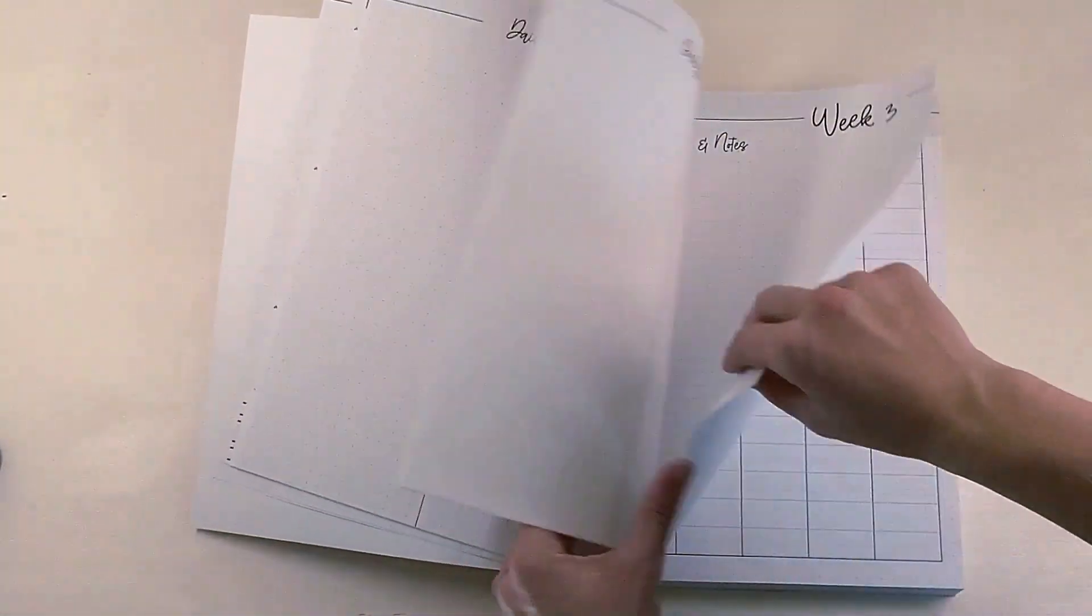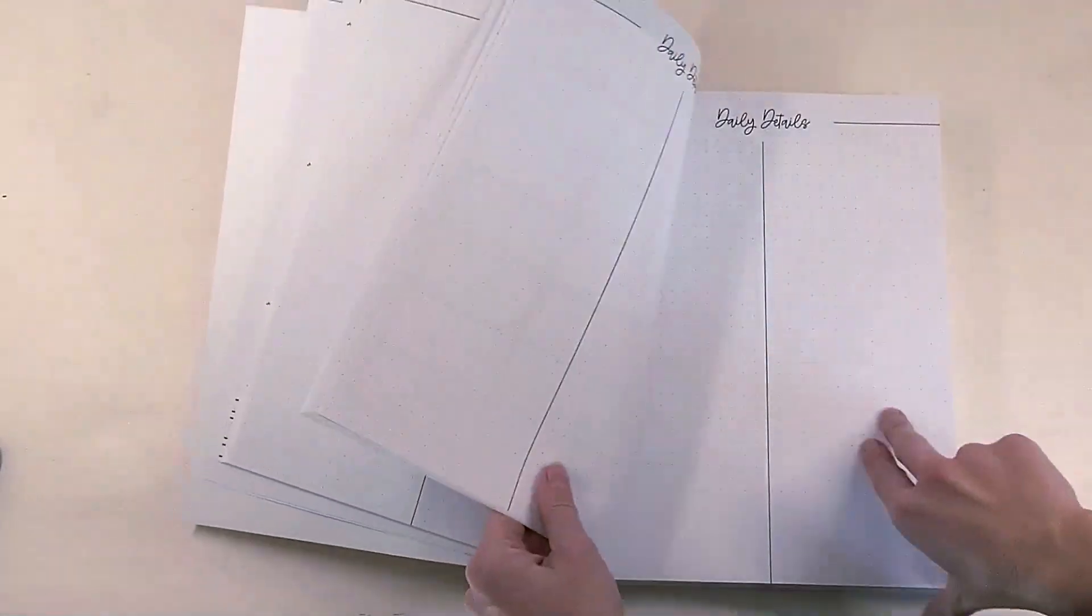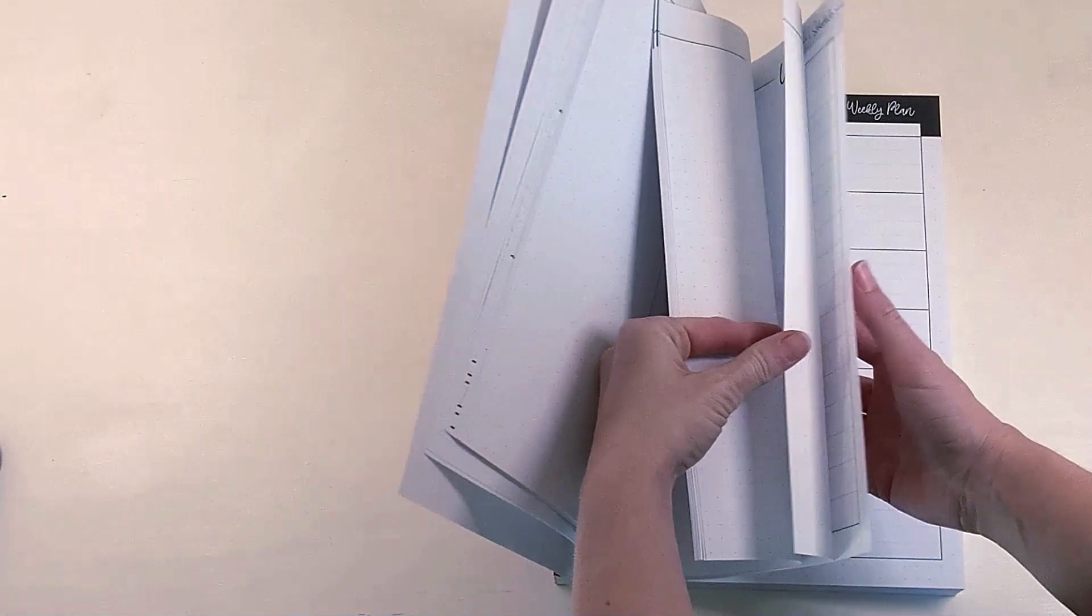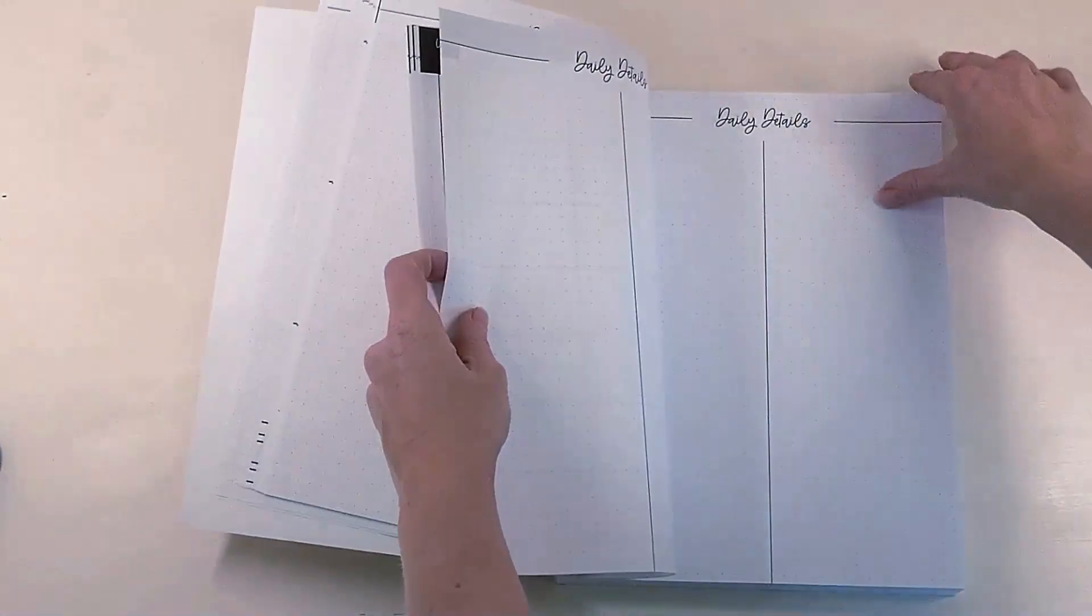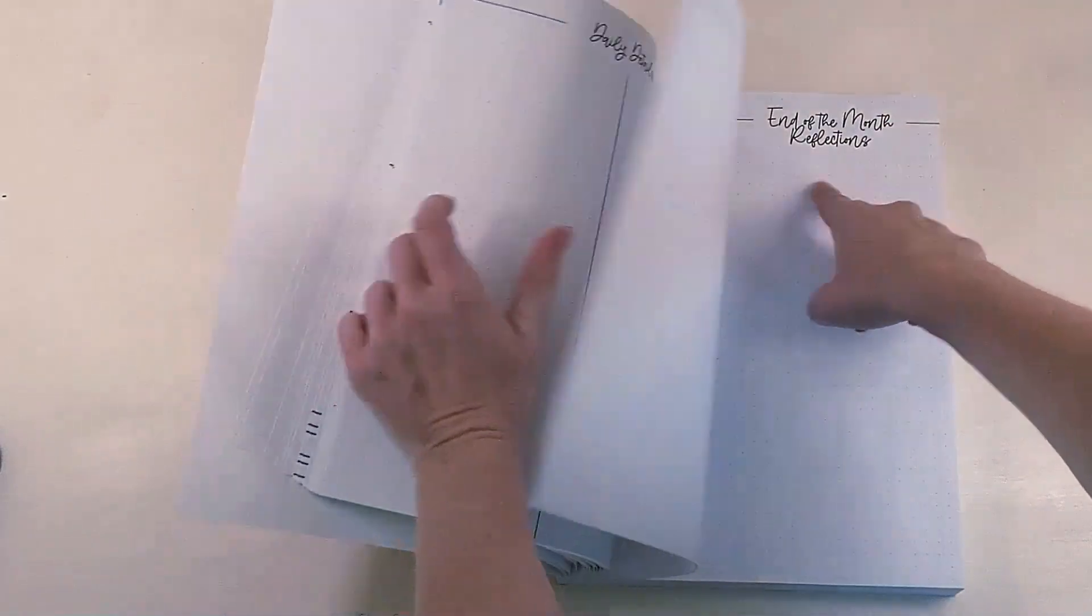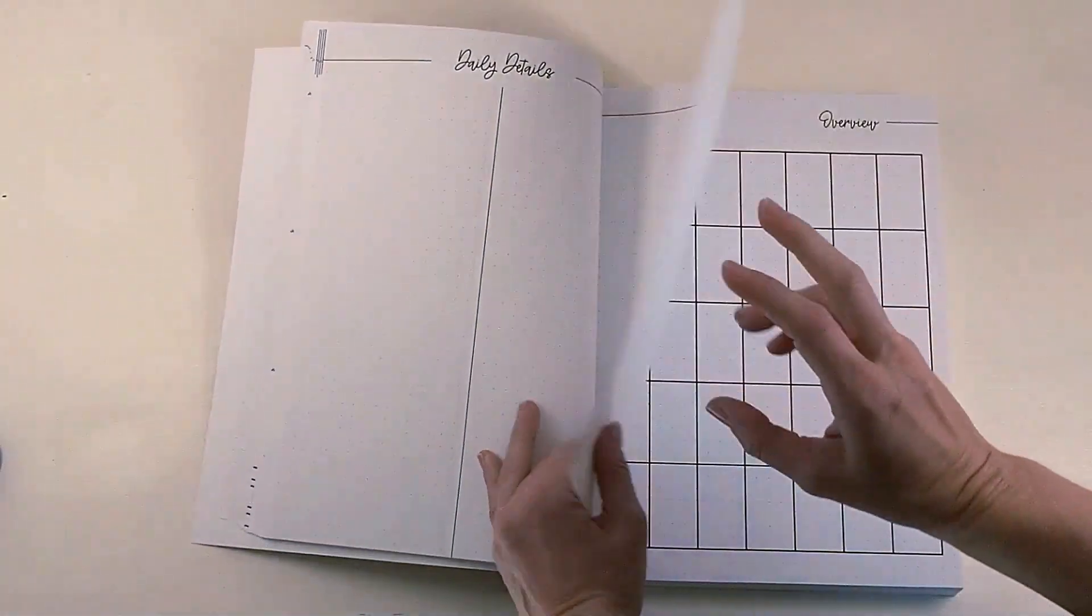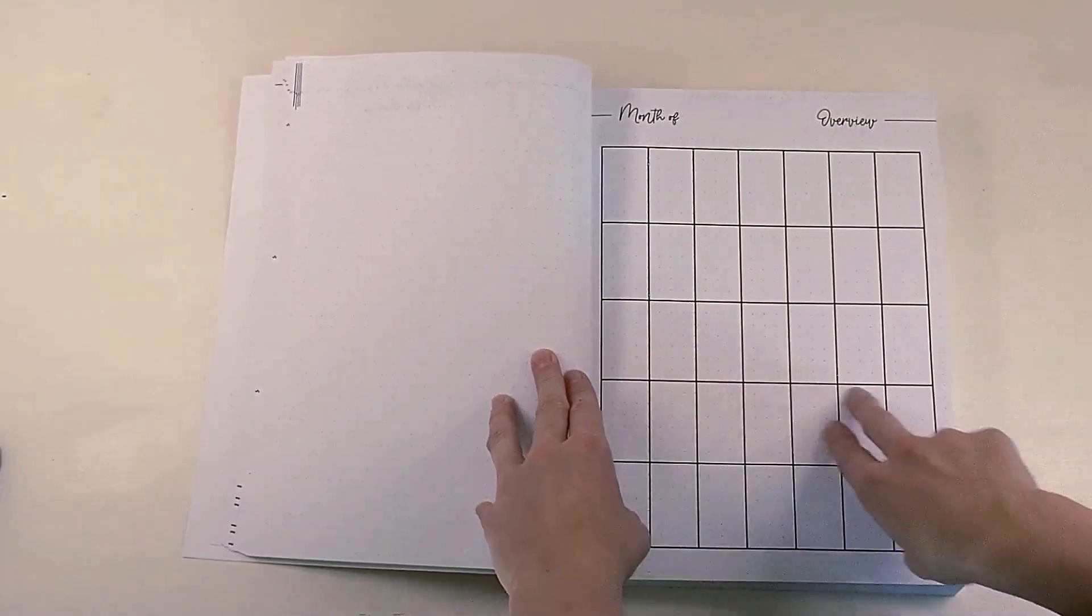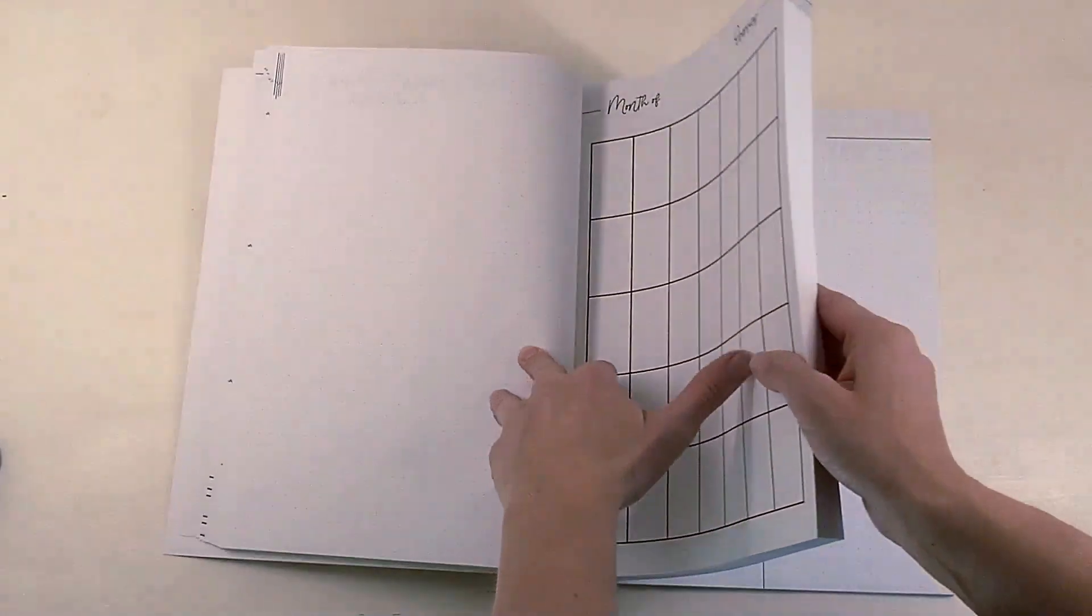And then it goes all the way to week four. And then it starts over with the month. So we have end of month reflections page. And then we start over with another month. And this pattern, the month, and then four weeks is repeated until we get to the back of the book.